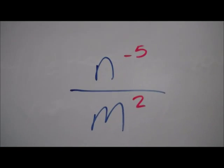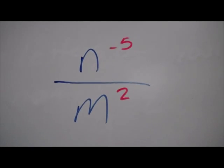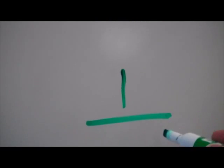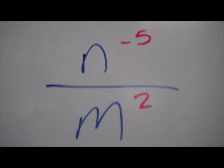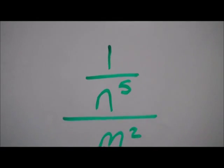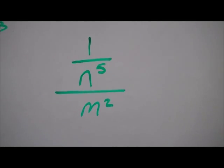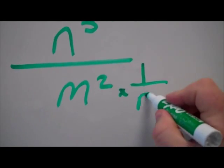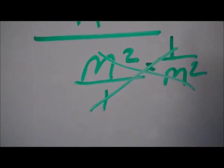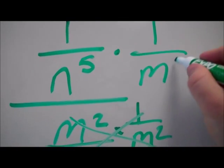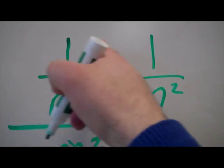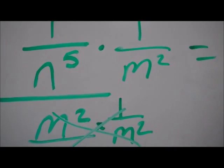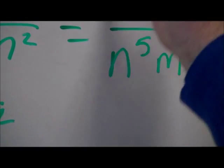Finally: n to the minus 5 over m squared — lots of weird stuff going on in this problem. First thing I want to do is simplify that n up top. It's 1 over n to the fifth, over m squared. I'm not a big fan of what's going on here, so let's get rid of this m squared. Multiply by the reciprocal: 1 over m squared. We know how to multiply fractions — 1 times 1 is 1, n to the fifth times m squared. You can't reduce that, so it would just be n to the fifth m squared. That's my final answer.